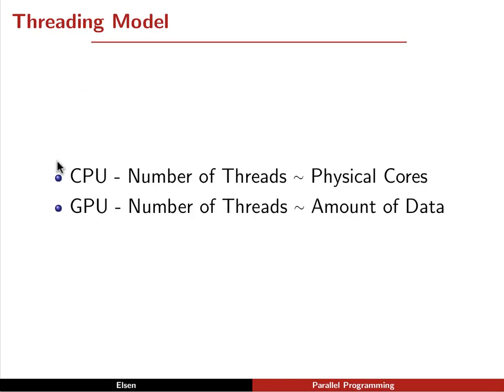The main idea, again, is that the CPU, the number of threads is related to the physical cores, and on the GPU, the number of threads is related to the amount of data that you're processing. This is a very key idea that you need to understand early on.